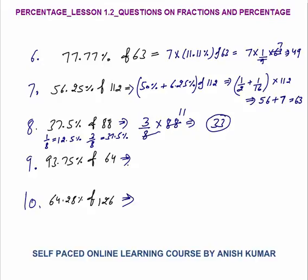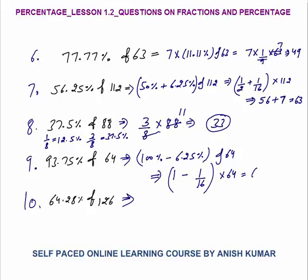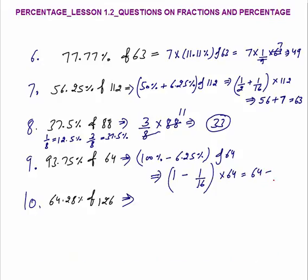93.75% of 64 — can I say this equals 100% minus 6.25% of 64? 100% means 1; 6.25% means 1/16 of 64. 1 of 64 is 64, minus 1/16 of 64 is 4. So the answer is 60. You must be able to solve this verbally without writing.